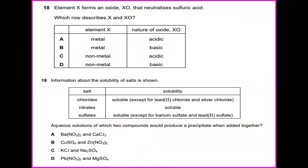Element X forms an oxide XO that can neutralize sulfuric acid. Which best describes X and XO? The answer would be metal and basic oxide, B.